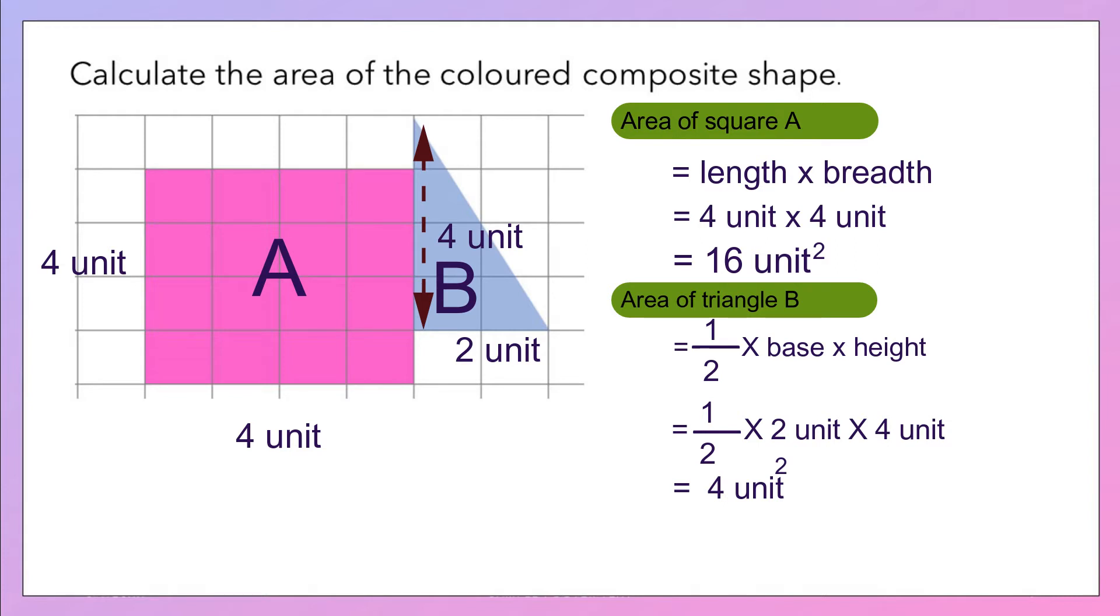Now to find the area of composite shape, we have to total up the area of square A and the area of triangle B. So when you total up, you will get the answer 20 square units.